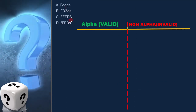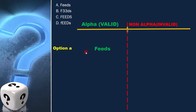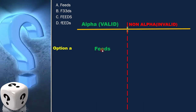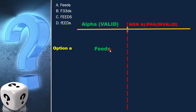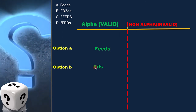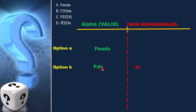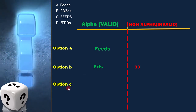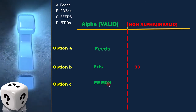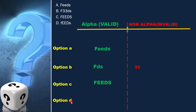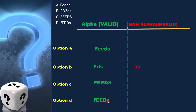Now let's analyze each option one by one. Option A is F-E-E-D-S. Option B is F-3-3-D-S. Option C is F-E-E-D-S. Option D is F-E-E-D-S.